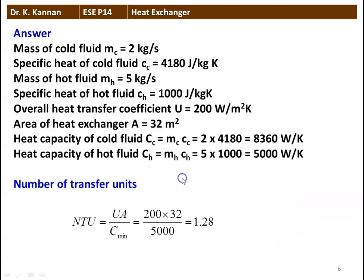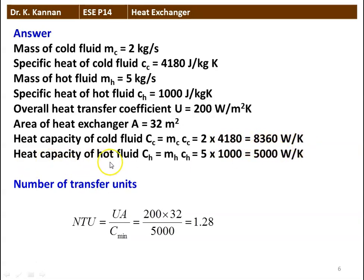We will see how in the next slide. The data given: mass of the cold fluid = 2 kg/s, specific heat of cold fluid = 4180 J/kg·K, mass of hot fluid = 5 kg/s, specific heat of hot fluid = 1000 J/kg·K, overall heat transfer coefficient U = 200 W/m²·K, area = 32 m². Heat capacity of cold fluid: CC = MC × CPC = 2 × 4180 = 8360 W/K. Heat capacity of hot fluid: CH = MH × CPH = 5 × 1000 = 5000 W/K. NTU = UA / C_minimum = 200 × 32 / 5000 = 1.28. That is the answer.